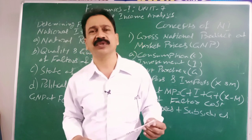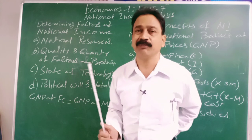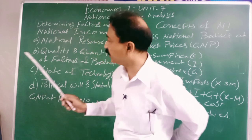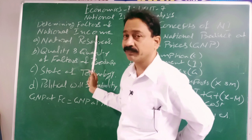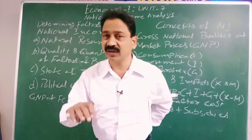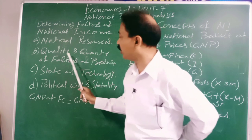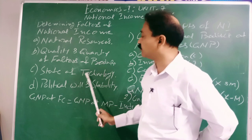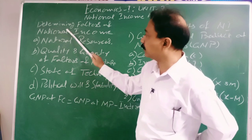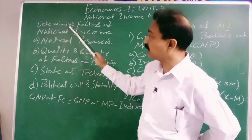Generally this calculation is done by the CSO — the Central Statistics Organisation. Now let us look at the determining factors of national income. We will discuss the formal definitions later in detail. What decides whether national income is increasing, decreasing, or constant? It is determined by four factors: natural resources, quality and quantity of factors of production, state of technology, and political will and stability.